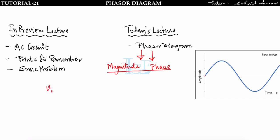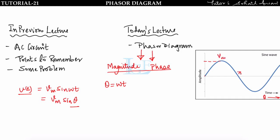Suppose an AC sine wave V(t) = Vm·sin(ωt). Since θ = ωt, we can also write Vm·sin(θ). If we plot the waveform between θ and V(t), we get a sinusoidal wave. This wave has a peak value Vm, goes to 0 at π, and again at 2π, with a negative peak of −Vm.